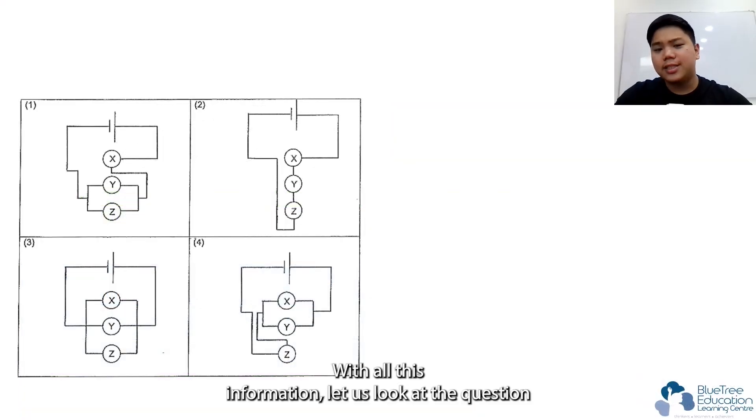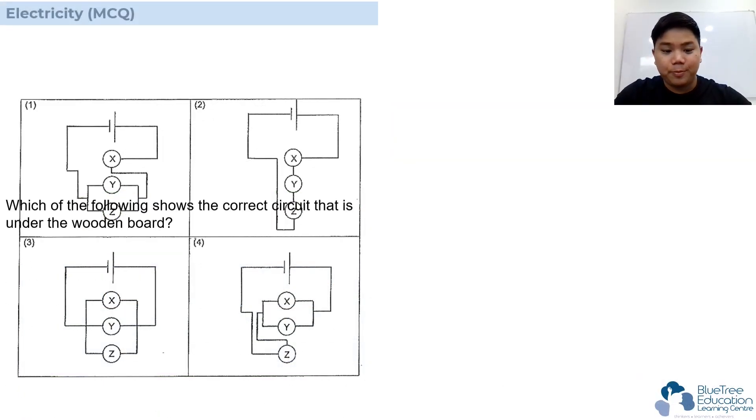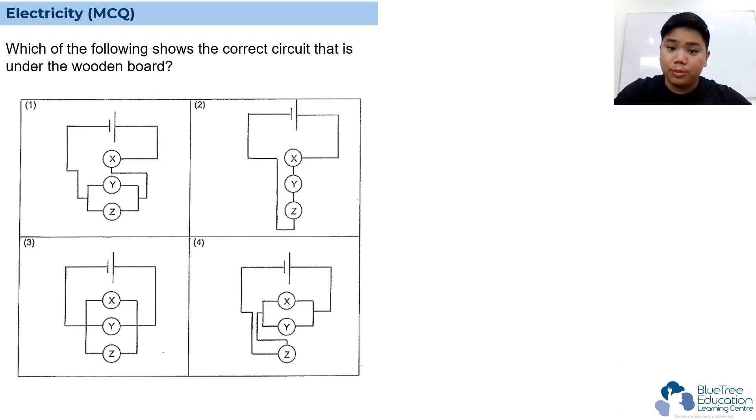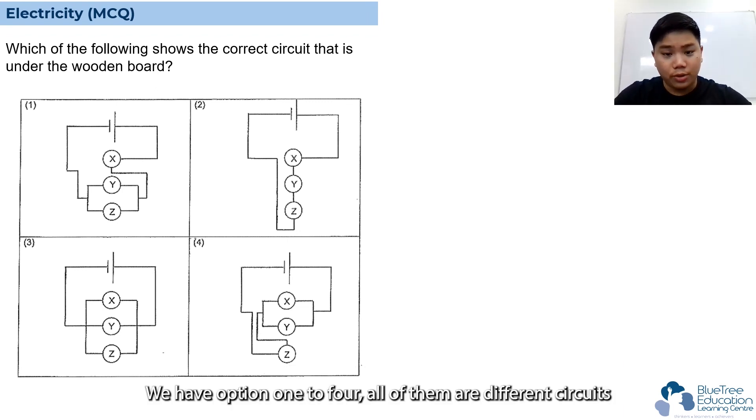With all this information, let's now look at the question: which of the following shows the correct circuit that is under the wooden board? Options one to four all show different circuits, and only one of them is actually the circuit under the wooden board.